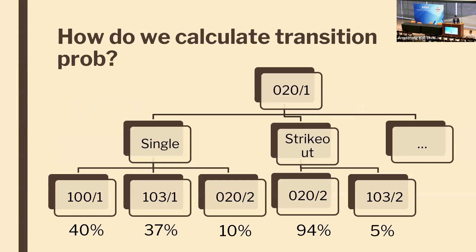Here's another way to visualize a Markov chain. With a runner on second and one out, a single results in the next state being 1-0-0-1 forty percent of the time, and 1-0-3-1 thirty-seven percent of the time. In the first outcome one run was scored, while in the second zero runs were scored. In the full Markov chain, we see every state with every possible result.